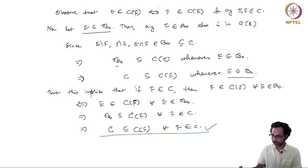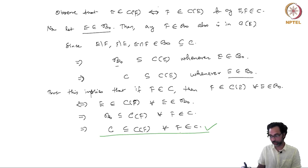This completes the proof of the monotone class lemma, and now we are going to use this monotone class lemma to prove the theorems of Fubini and Tonelli.